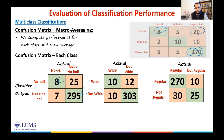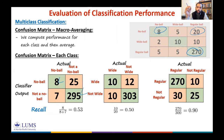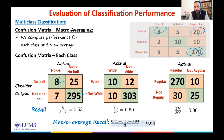Computing recall for each class: recall for no-ball is 8/(8+7) ≈ 0.53; recall for wide ball is 10/(10+18) ≈ 0.50 (10 over 5+10+5); recall for regular ball is 270/300 ≈ 0.90. So we have three recall values. To get one value, we take a simple average: (0.53 + 0.50 + 0.90) / 3 ≈ 0.64. This is the macro-average recall. Similarly, you can compute macro-average precision or macro-average specificity.